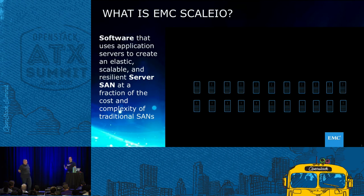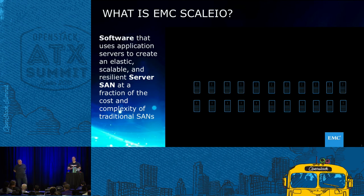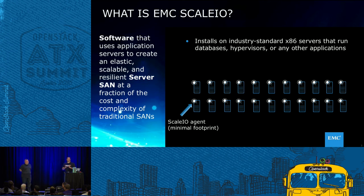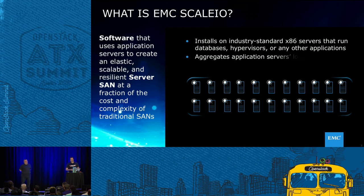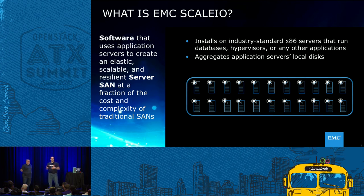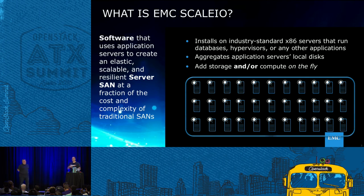So what is ScaleIO? ScaleIO is a scale-out block storage solution that uses Ethernet or InfiniBand — it just needs a TCP/IP connection between the nodes — and takes local disk and shares it out with an extremely small overhead: 5 to 15 percent of CPU and just a few megabytes of memory on each host. This enables you to deploy in a hyperconverged manner, or two-layer keeping application and storage separate. It scales linearly from 3 hosts all the way up to 1,024 hosts, scaling both IO performance and capacity as you grow.